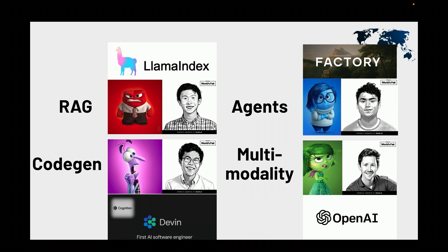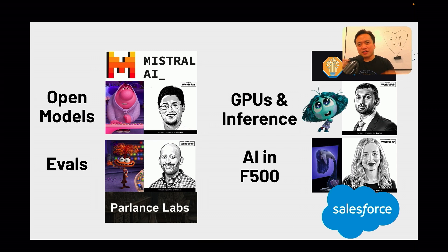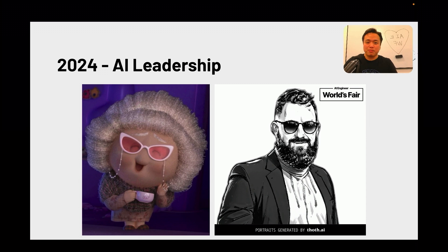I've been thinking about the Inside Out metaphor a lot: as the AI engineer matures, so does the number of concerns you have to juggle in your head. This year, after you're a competent AI engineer, you're now faced with: I have to migrate to open models, I have to build up my evals — maybe I should have done that first. Maybe I should scale up my inference, or maybe deploy it to the Fortune 500. And on the management side, I should be hiring teams of AI engineers and managing AI strategy for my company.